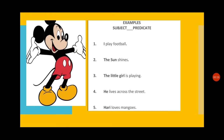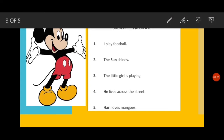Remember that the subject can be a word or a group of words, and the subject is a noun or pronoun that tells us who or what the sentence is about. Let's take the first sentence: 'I play football.' This sentence is about whom? It is about 'I'. 'I' is a pronoun, so 'I' is the subject. 'Play football' tells us about 'I', so 'play football' is the predicate.